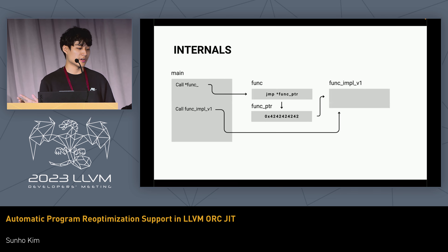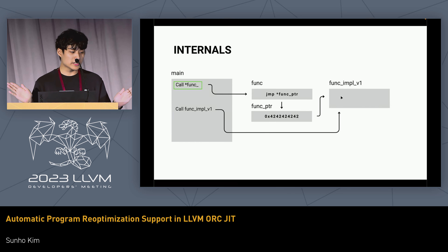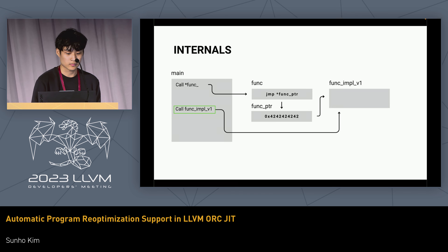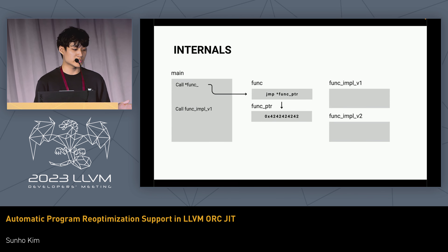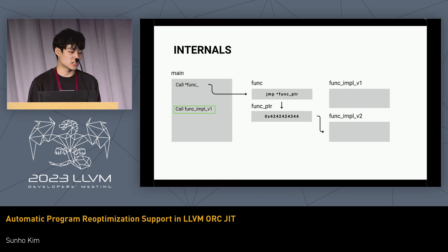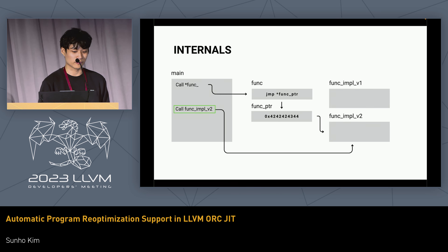Here's a brief diagram of what's going on. The first line shows an indirect call using a trampoline with a function pointer, pointing to function version 1. The second line shows a direct jump to the function, where the instruction actually points to function version 1. When a new function is compiled due to re-optimization, we first update the function pointer of the trampoline, and then rewrite the direct jump to point to function version 2. By doing this, we remove all indirect overhead, which was a pretty good performance gain — for instance, we are now jumping directly instead of indirectly.